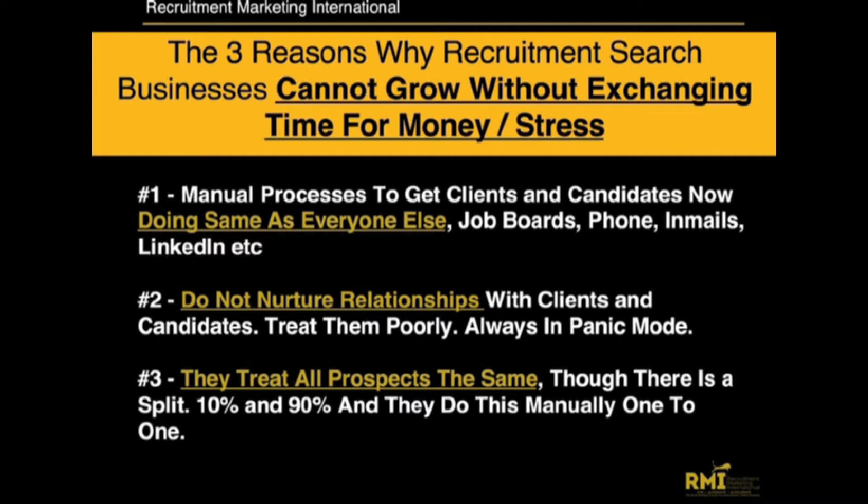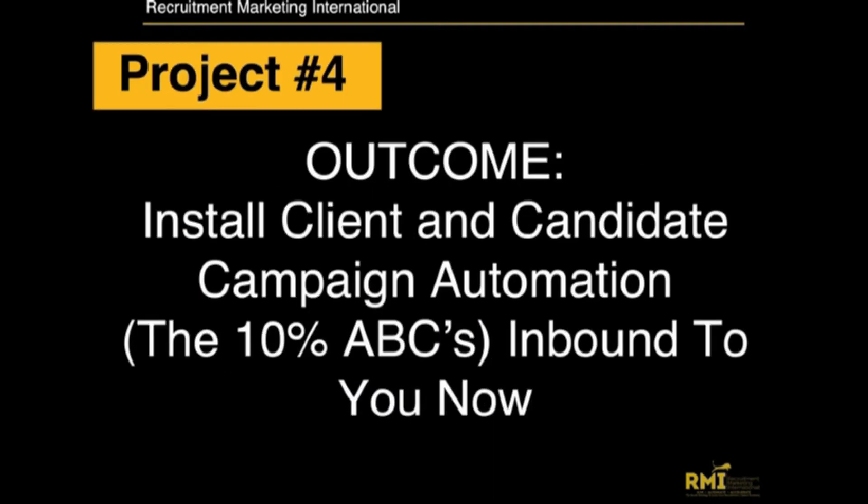The third problem is this: we treat all prospects the same, which means there's a split between your clients and your candidates. A client may be hiring now or in nine months, but you don't know. So how do you actually filter that out? You can't do it manually — you need to have a process and a system for this.